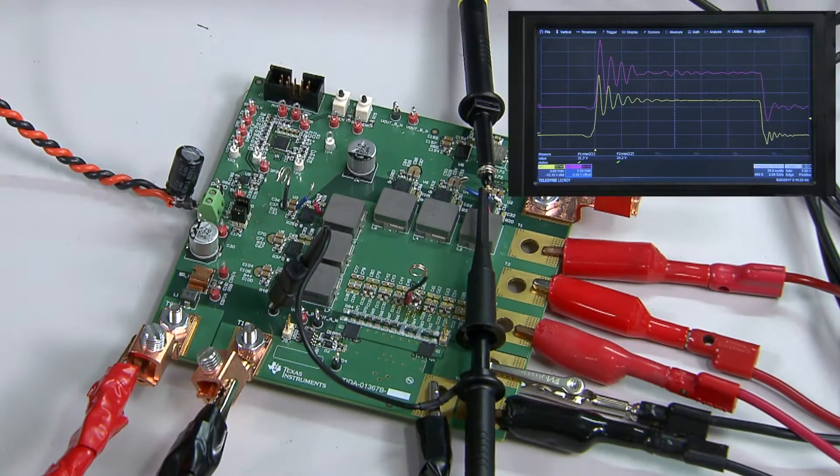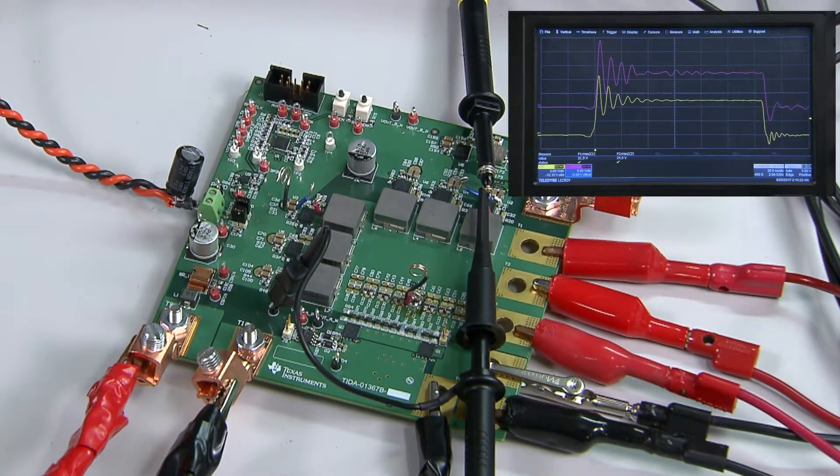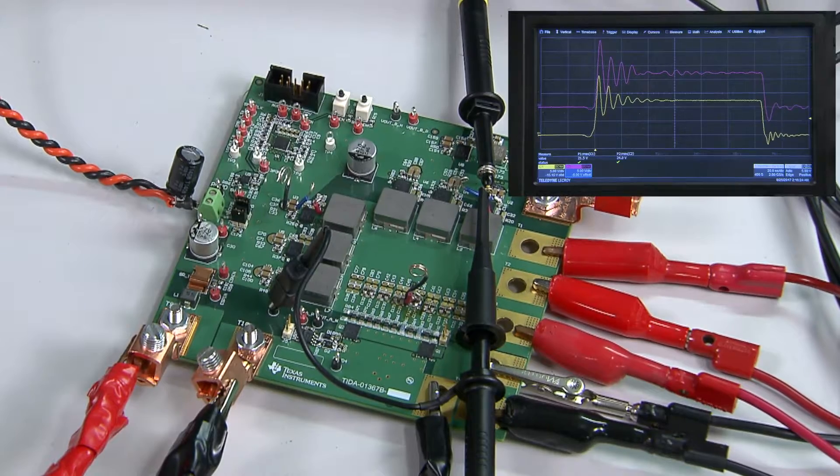A tight ground lead and no bandwidth limiting on the scope are essential to see what's really happening at the phase node. Also be sure to have a high load in place to make sure you're seeing the worst case ringing.